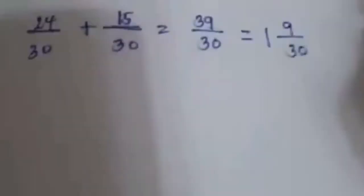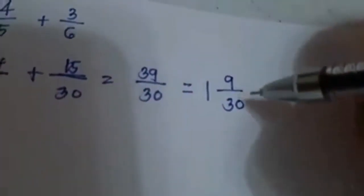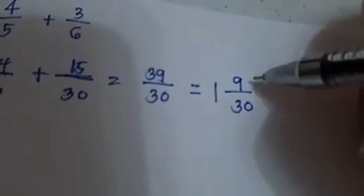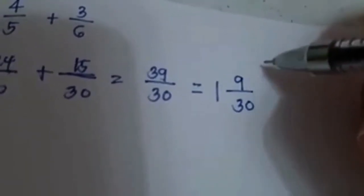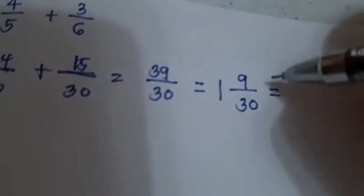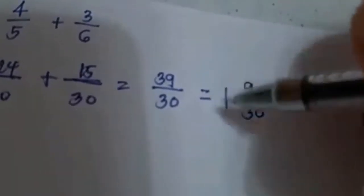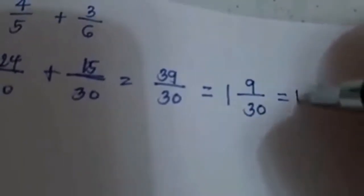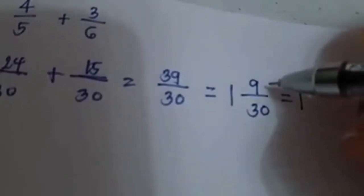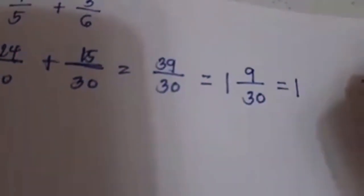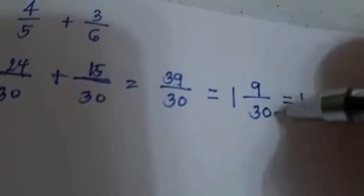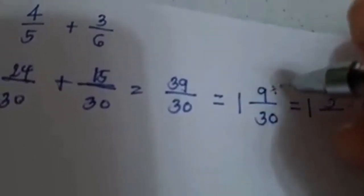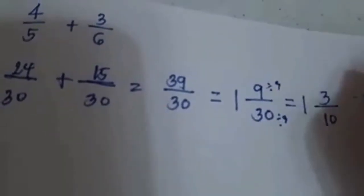Before you finalize your answer, examine the fraction. You have a numerator of 9 and a denominator of 30. Check whether there is a number that can divide both 9 and 30. If there is, you have to convert this to lowest terms. When converting a mixed number to lowest terms, copy the whole number, then find the GCF of 9 and 30, which is 3. So 9 divided by 3 equals 3, and 30 divided by 3 equals 10. Your answer is 1 and 3 tenths.